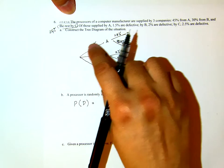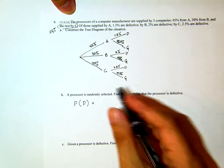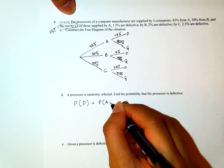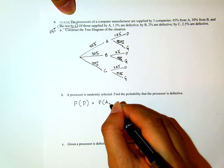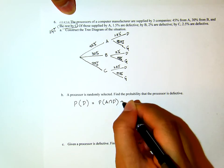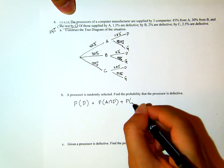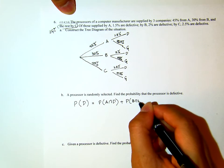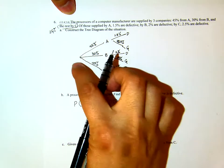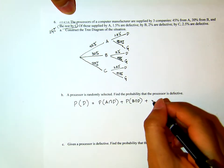Now, there are three ways to have that processor to be defective. Either this path here, which is probability that the processor from A and defective, plus the probability that it is from B and defective, plus the probability that it is from C and defective.